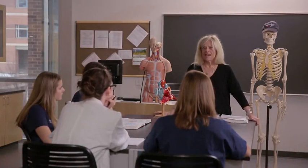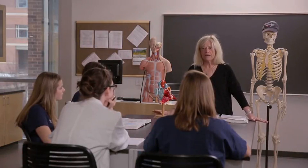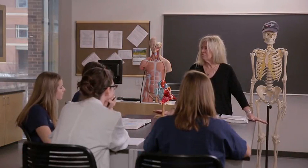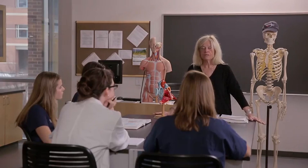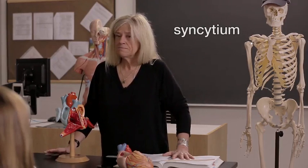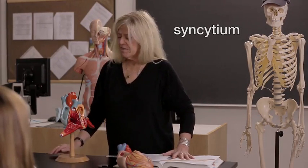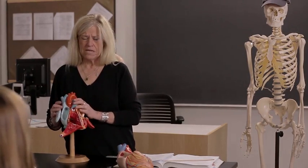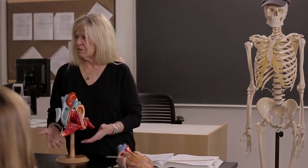Earlier in class, we talked about the heart being a hollow, muscular pump. Now we're going to start thinking about how the heart does its pumping action. At the microscopic level, the heart is actually organized as two separate functional units. We call each of those functional units a syncytium. The heart is organized into an atrial syncytium and a ventricular syncytium.